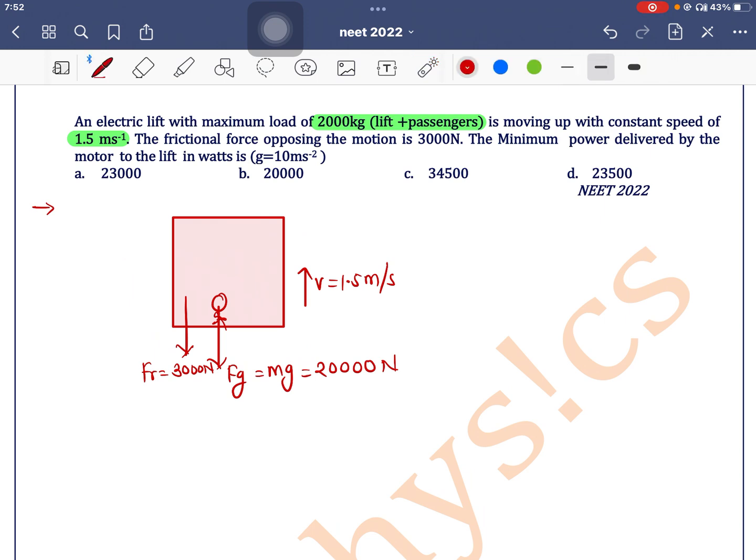Power can be written as P = F × V. The load we are lifting includes the weight of the lift and passengers, which is 20,000 Newtons.